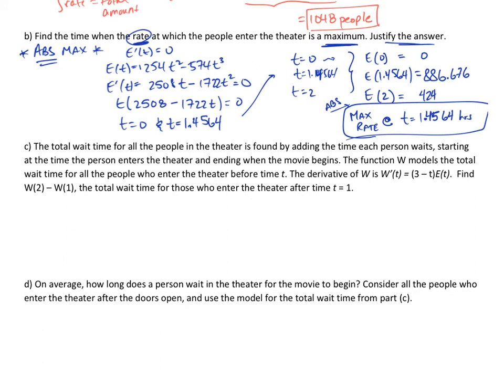In part C, it says the total wait time for all the people in the theater is found by adding the time each person waits, starting at the time the person enters the theater and ending when the movie begins. This stands out to me as some sort of sum, which means we need some sort of integral possibly. The function W models a total wait time for all the people who enter the theater before time t. The derivative is W'(t) = (3 - t)E(t). Find W(2) - W(1), the total wait time for those who enter after time t = 1.